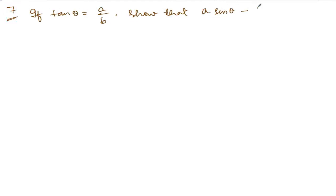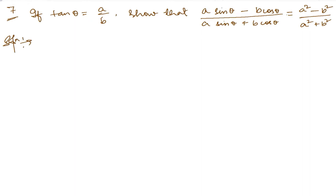Now we are doing exercise 10.2, question number seven. Let me write down the question. Question says: tan θ is equal to a by b, so that we need to show and prove this. There may be different ways for solving this question — your teacher may have solved it differently. I'm going to solve it differently, so please bear with me.